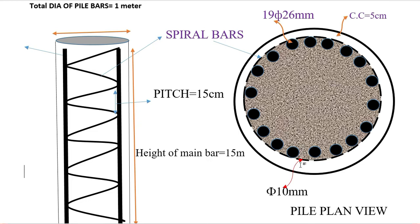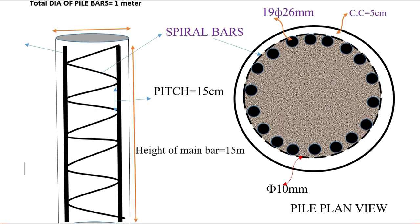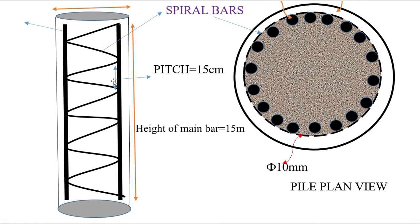The spiral ring diameter is 10 millimeter, the pitch between the spiral rings is 15 centimeter, and the total height of the main bars used in the pile is 15 meter.